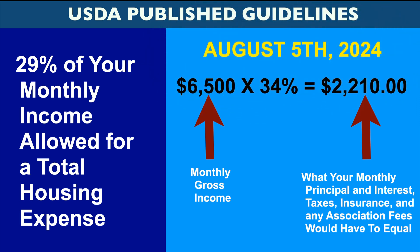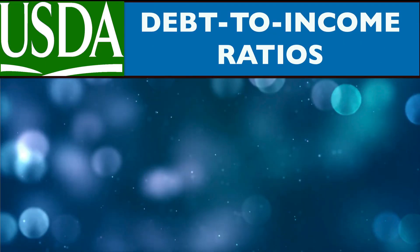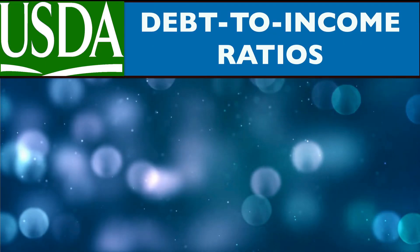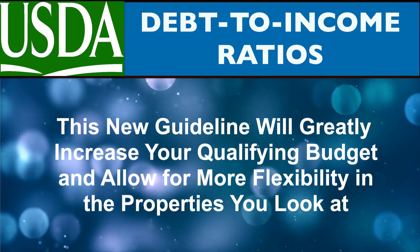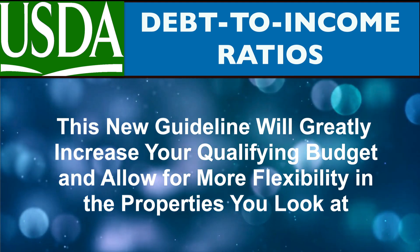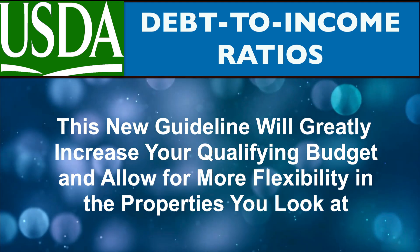Using the above example, this would automatically be able to increase your monthly payment to $2,210. While this is only a brief summary of USDA debt-to-income ratios, remember that this new guideline will greatly increase your qualifying budget and allow for more flexibility in the properties you look at.